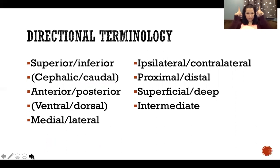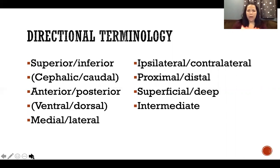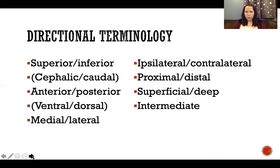Superior means up, inferior means down. Cephalic and caudal aren't used as commonly with humans, but you will hear those terms in research articles. Cephalic means toward the head, caudal means toward the tail. It's mostly synonymous with superior and inferior, except once we get past the tailbone it gets confusing — which way is toward the tail? So cephalic and caudal work best for the trunk but not for the lower extremities.